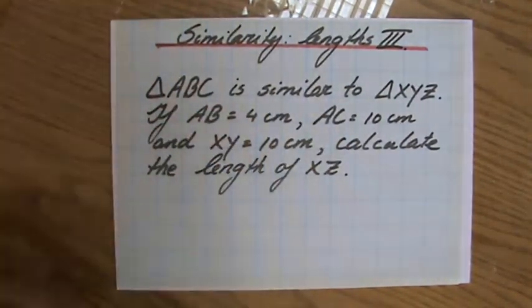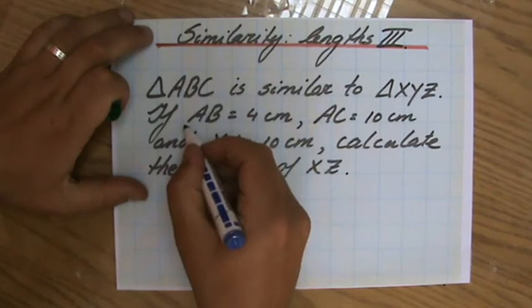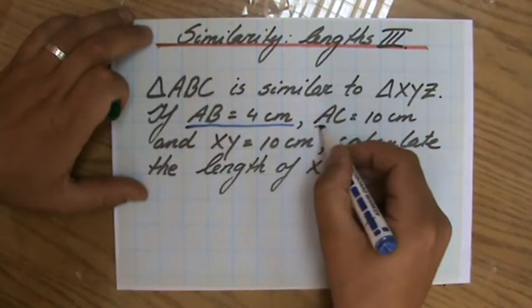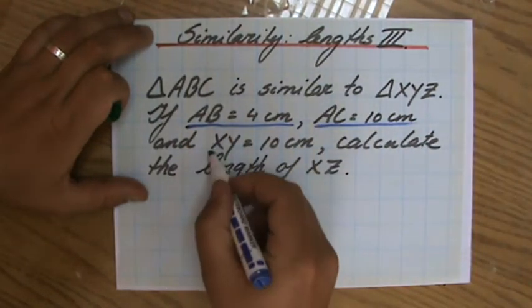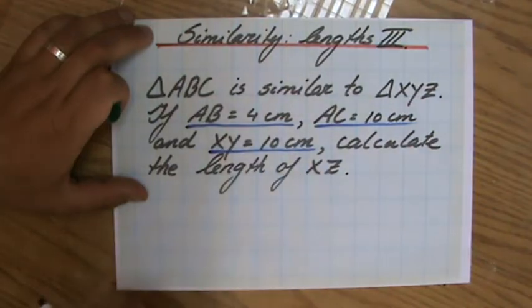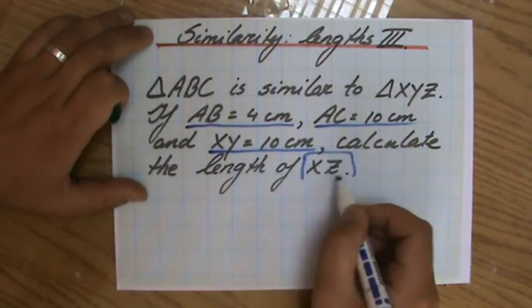It says triangle ABC is similar to triangle XYZ. And if AB equals 4 centimeters and AC equals 10 centimeters, and they say XY equals also 10 centimeters, calculate the length of XZ.